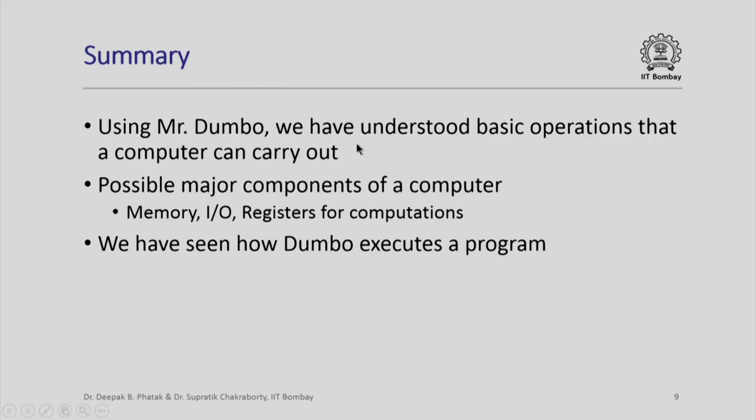In summary, using Mr. Dumbo, we have understood the basic operations that a computer can carry out. In the process, we have also seen the major components that a real computer is likely to have: it will possibly have memory, it will have input/output capabilities, and perhaps a set of registers for computation. It is quite likely that a real computer, which has to compute in exactly the same way that Dumbo does, should have these components as well. Finally, we have seen through an animation how Mr. Dumbo executes a program that we write for him.